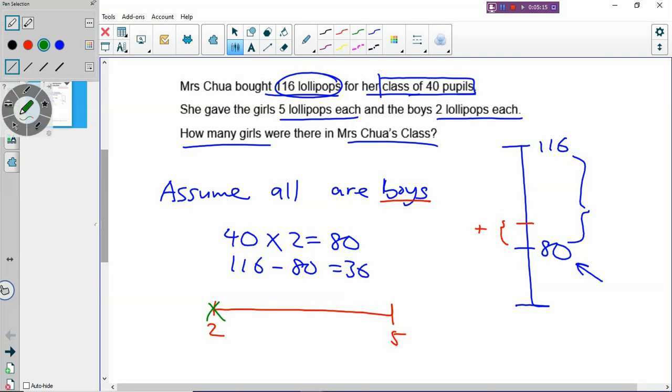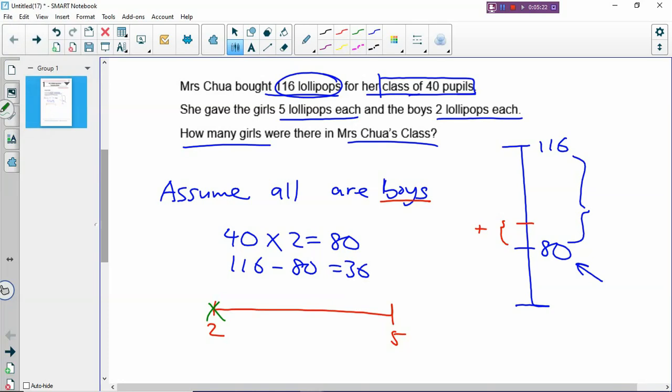You are going to put your finger at your assumption, which is at the boy, because every boy gets 2 lollipops. You are going to move from the boy, replace a boy with a girl. How do you move? You move from left to right, because a boy has 2 lollipops. You replace with a girl who is going to get 5 lollipops. How many do you move? You move 3 more. Which means that every time you replace a boy with a girl, you will always get 3 more lollipops.